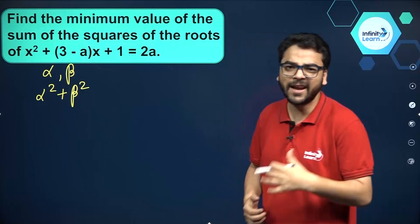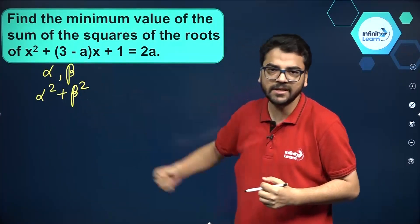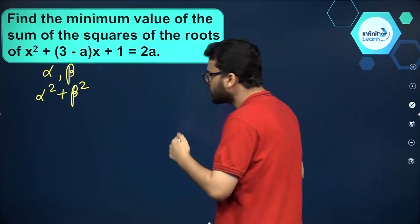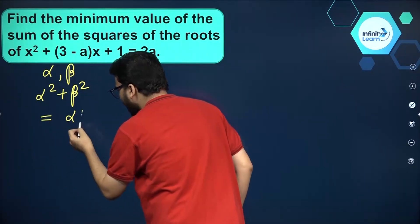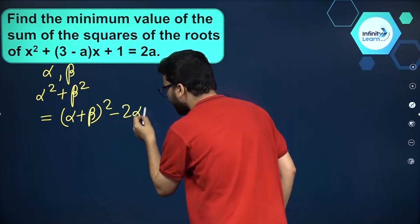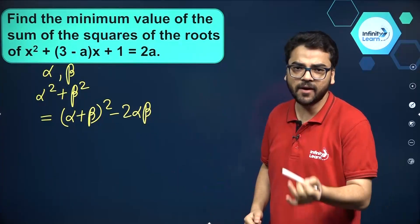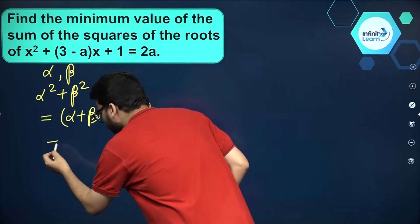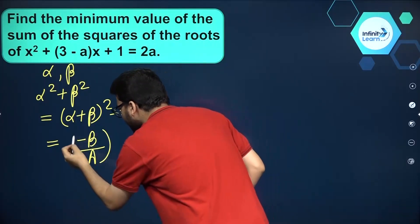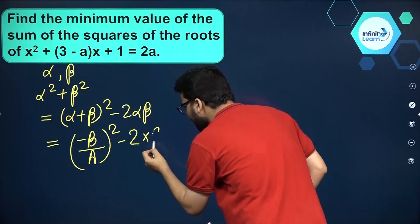We cannot find the values of alpha and beta separately, so we have to write alpha square plus beta square in the form of alpha plus beta and alpha beta. Alpha square plus beta square can be written as alpha plus beta the whole square minus 2 alpha beta. In a quadratic polynomial, alpha plus beta is minus b by a, so we get minus b by a the whole square minus 2 into alpha beta, which is c by a.